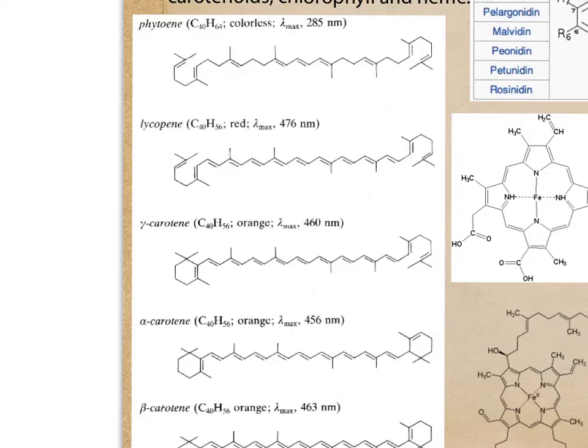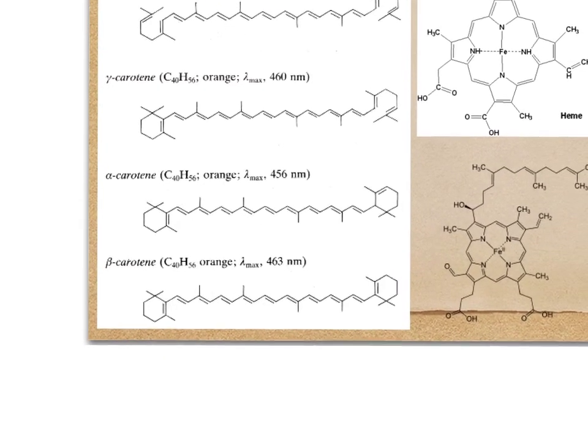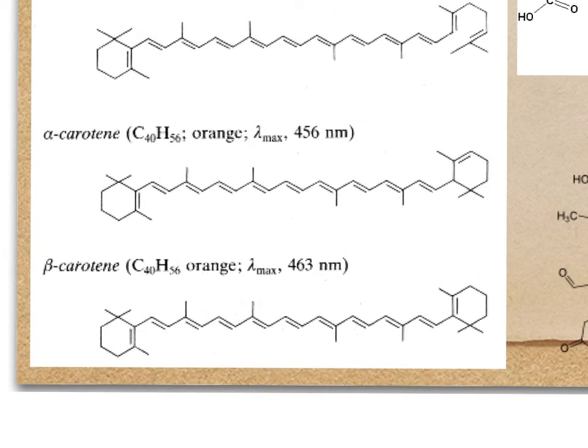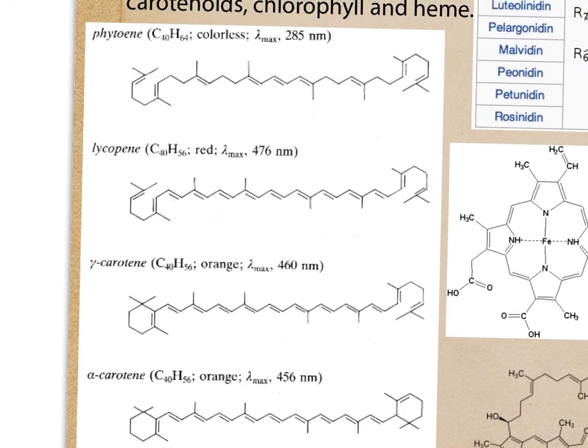Often, but not always, these end in rings on the terminal side. Notice this one ends in a ring. Here's an open ring structure. Alpha carotene does end in a ring, as well as beta carotene has the same. And notice what this also has, because these are pigments, is this is showing us the wavelengths of light that they will be absorbing. Notice alternating double bonds, C40, rings on either side. Those are for alpha and beta carotene, the ones we want to focus on.